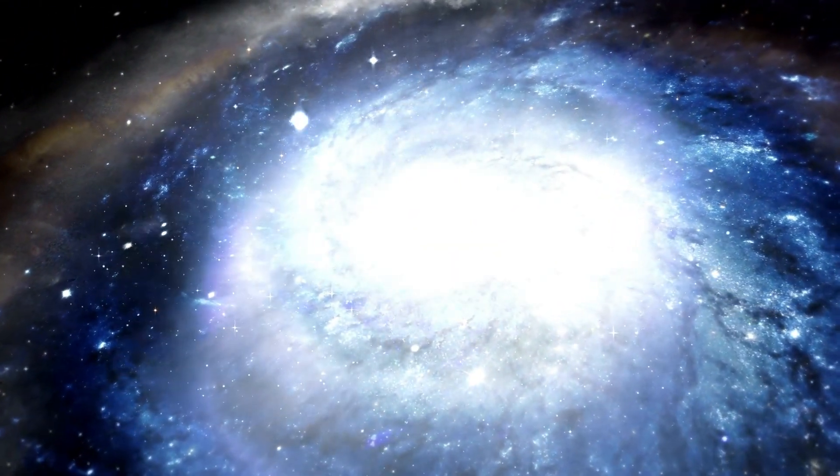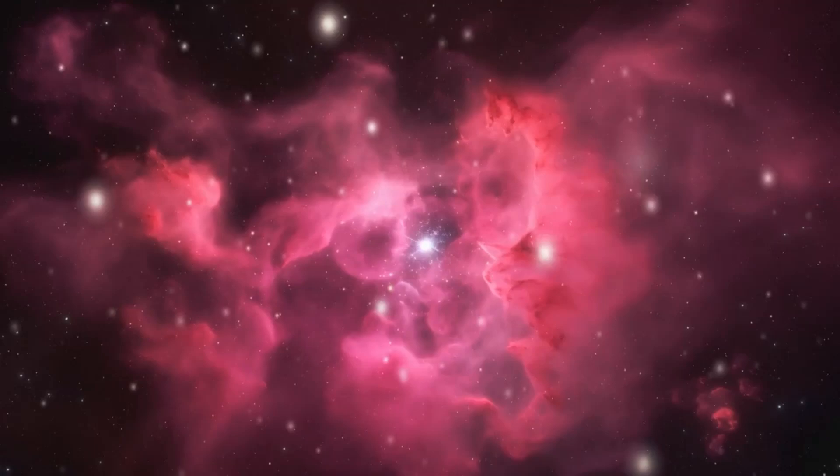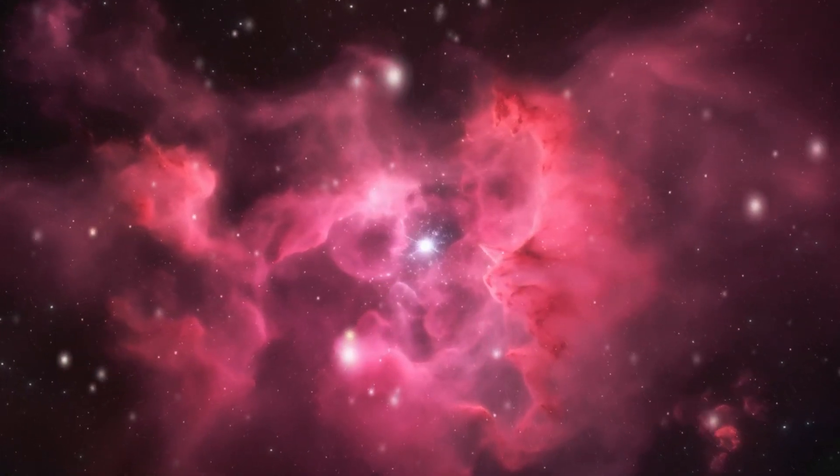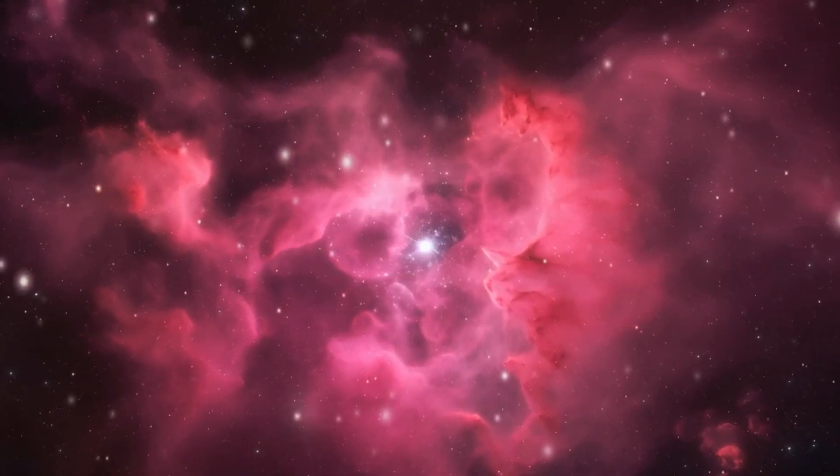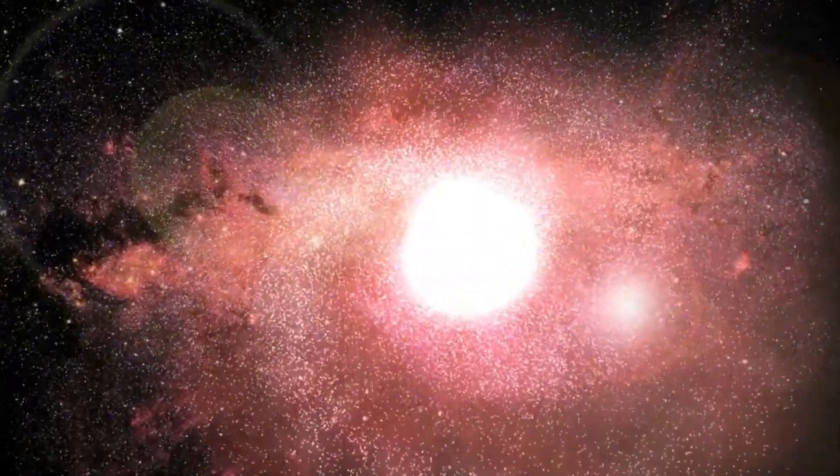The sun is primarily made of hydrogen and helium as plasma, a state of matter where electrons are not bound to atoms, resulting in a combination of free electrons and ions.